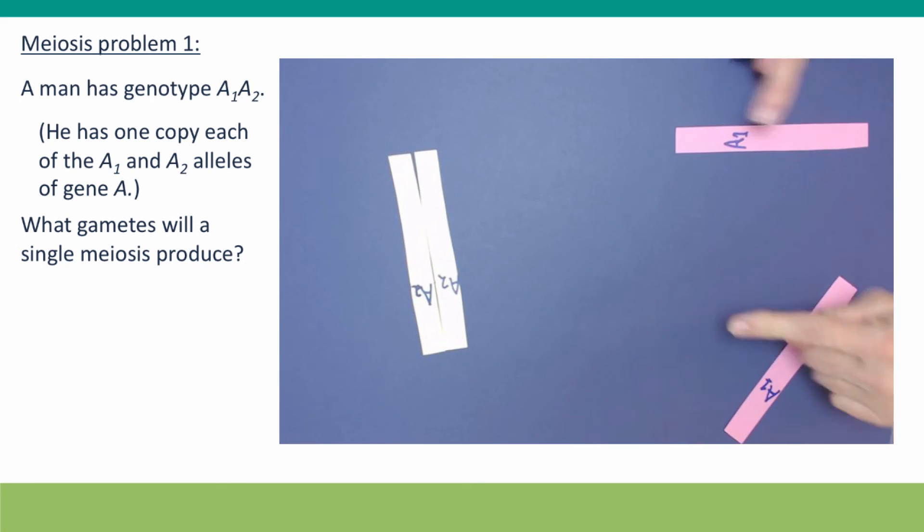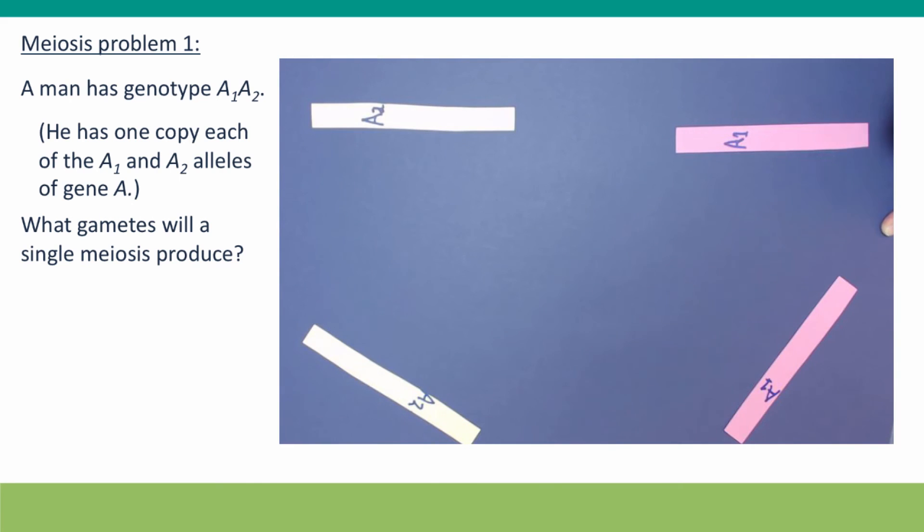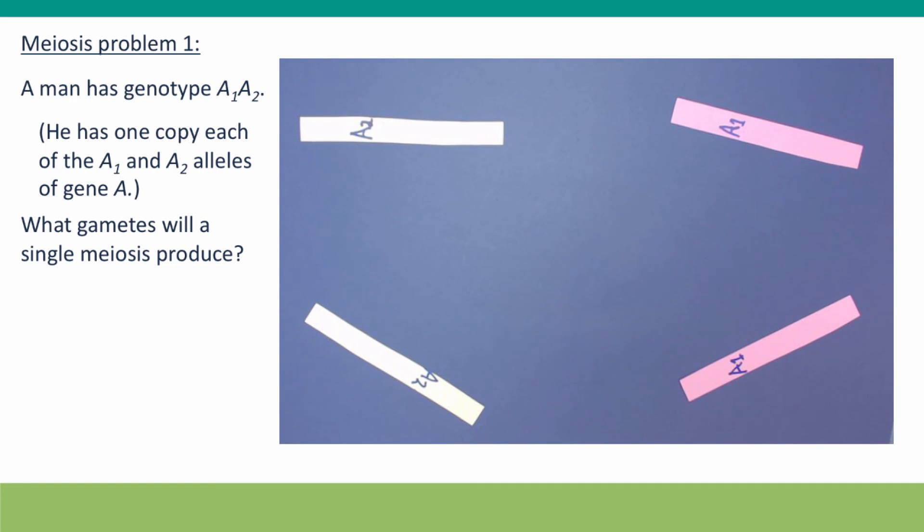The cohesin is cut by separase, and the sister chromatids come apart. The cell divides—both cells divide this way—generating the four products of meiosis: two gametes with genotype A₁ and two gametes with genotype A₂.